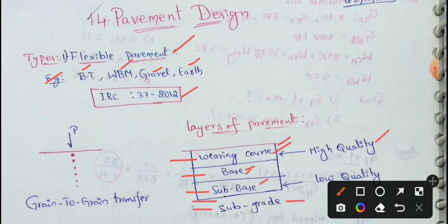Next, wearing course. This is a smooth surface. This is the highest quality of material. We are present in different types of layers in flexible pavement.